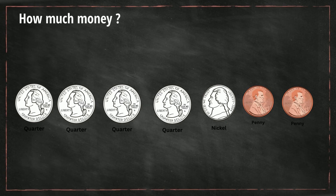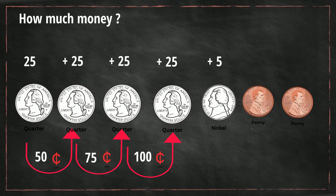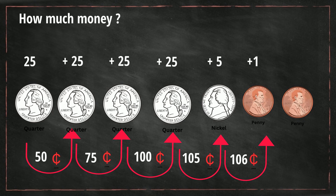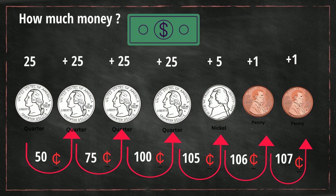With this one we begin with quarters. So we have 25 plus 25 and that equals 50. Then we'll add another quarter, so that becomes 75 cents. And then a fourth quarter, and that becomes 100 cents. Now we will add a nickel which is 5 cents, so we have 105 cents. And then we have two pennies, so we have 106 and then 107 cents. Now 100 cents equals a dollar bill, so since we have 107 cents, we can also call this $1.07.